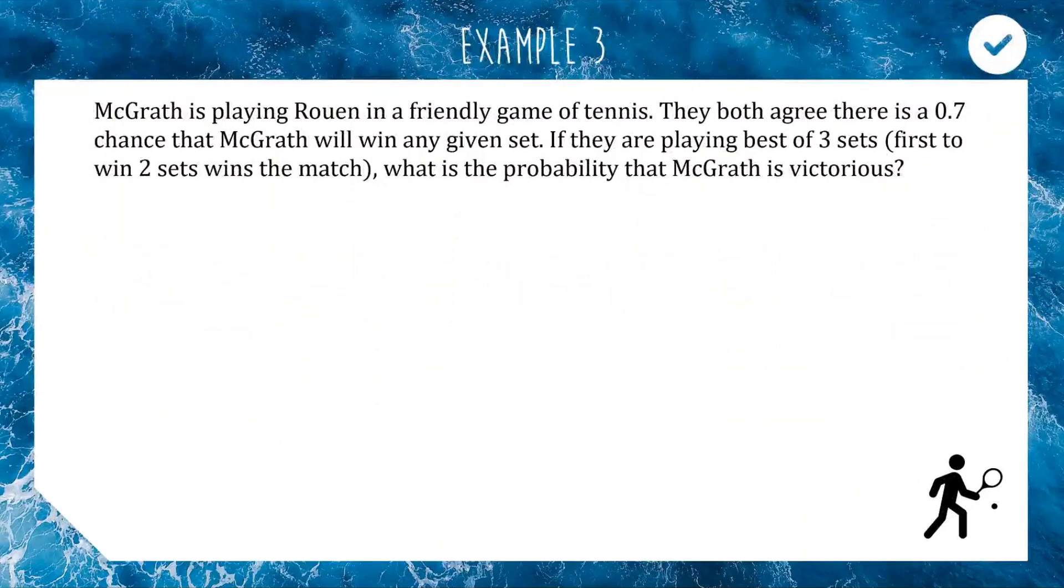Onto the last one. We've got McGrath is playing Rowan in a friendly game of tennis. They both agree there is a 0.7 or 70% chance that McGrath will win any given set. If they are playing best of three sets, which means that in tennis, if you win the first two sets, you've already won and you don't play the third. What is the probability that McGrath is victorious? Now this is based on actual stats, based on relative frequencies or experimental probabilities. Mr. Rowan is a hell of a math teacher, but his backhand is shitty to say the least. So this is actual math here.